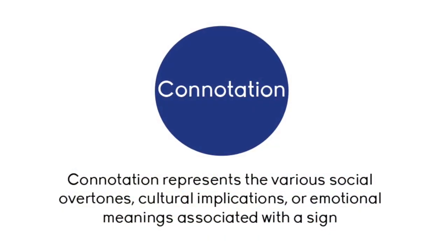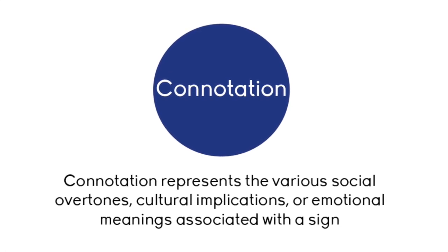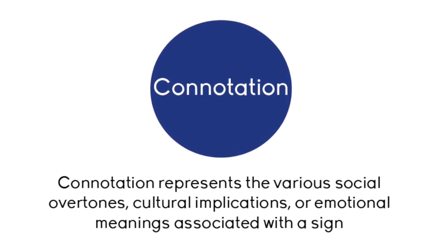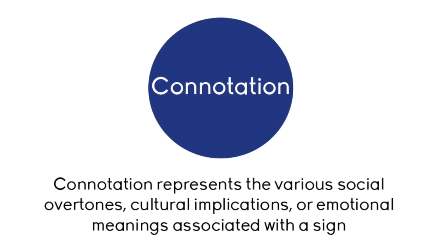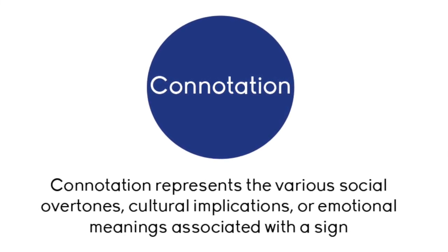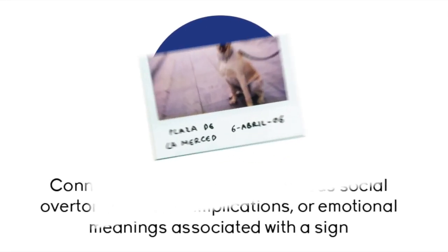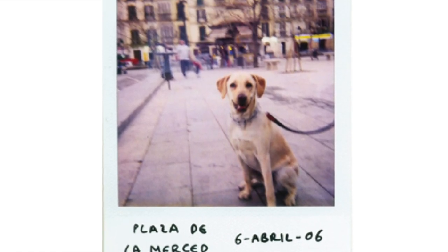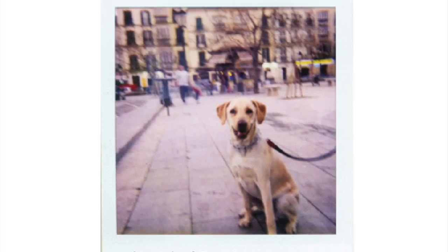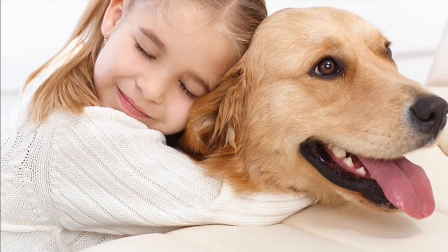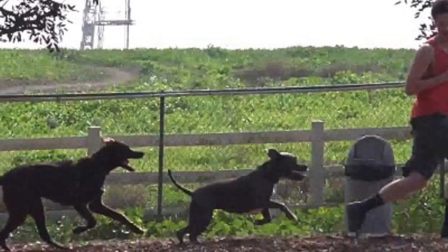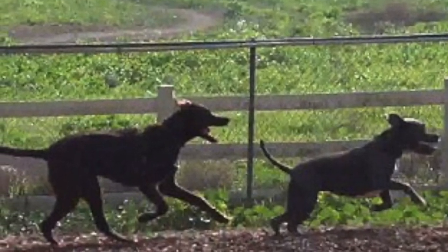Connotation represents the various social overtones, cultural implications, or emotional meanings associated with a sign. For example, if I show a group of people this photo of a dog, to one person it may invoke a happy memory of a much-loved pet, while another person may be remembering being chased by a dog and possibly feeling scared.